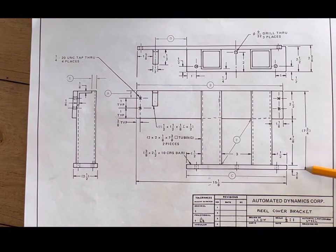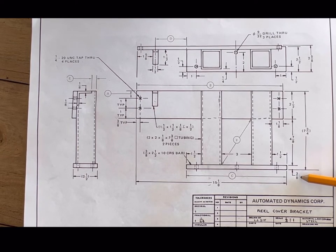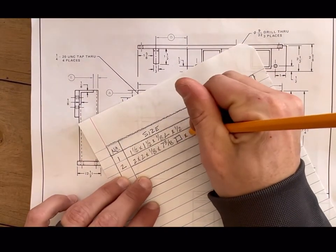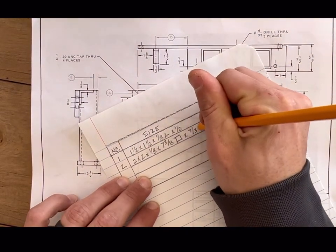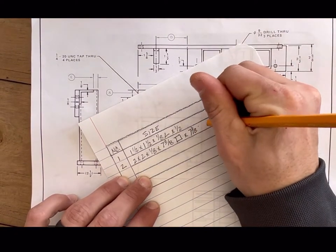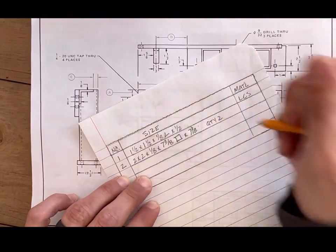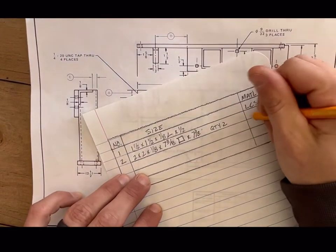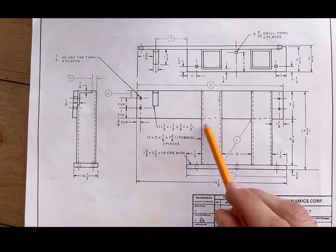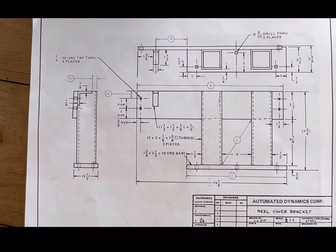We have a two by two by one eighth by seven and three eighths square tubing, not rectangular and not round. And we need to find what this length actually is. We have over here on the right side a seven and three quarters, but that includes a three eighths flat bar down here at the bottom. So we're going to remove that three eighths, which should take us to seven and three eighths length. We actually need a quantity two for this one, low carbon steel.